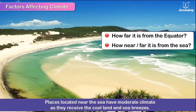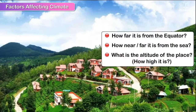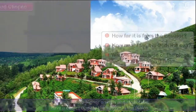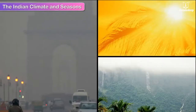How near or far a place is from the sea: places located near the sea have a moderate climate as they receive cool land and sea breezes. Altitude of the place — how high it is — also matters; places situated higher on hills and mountains have a cooler climate than those in the plains.